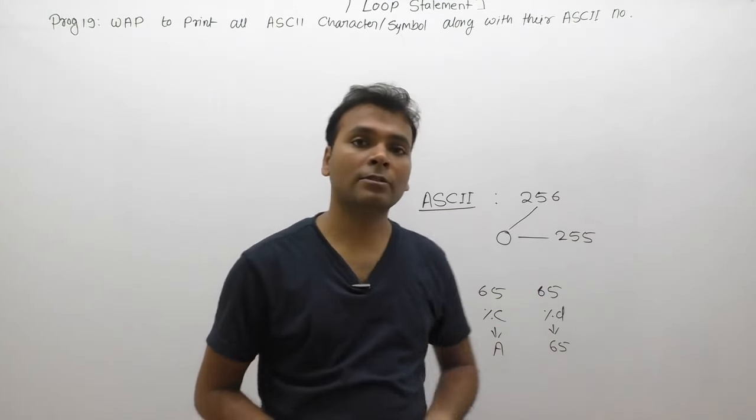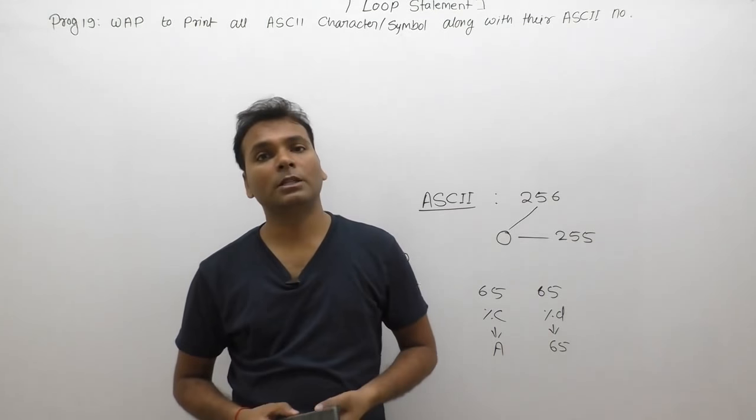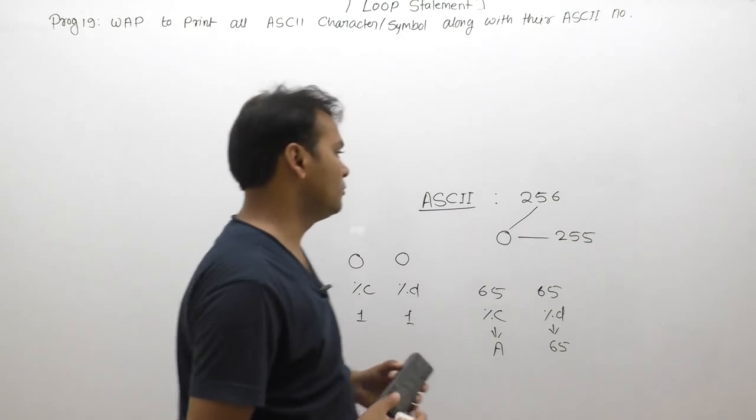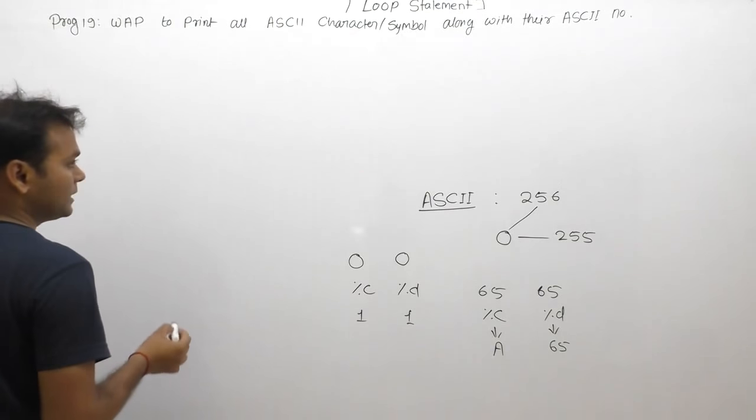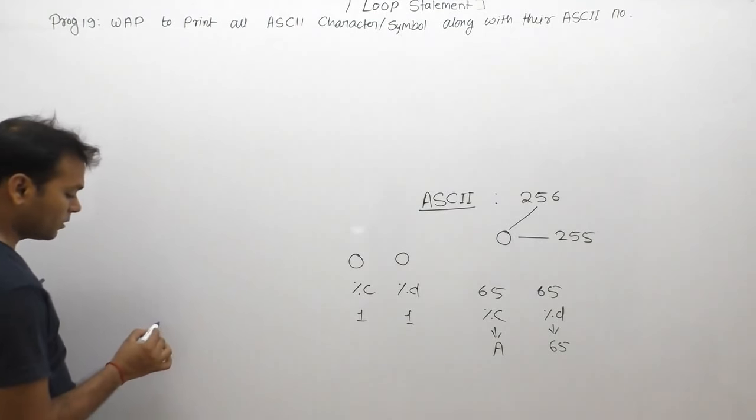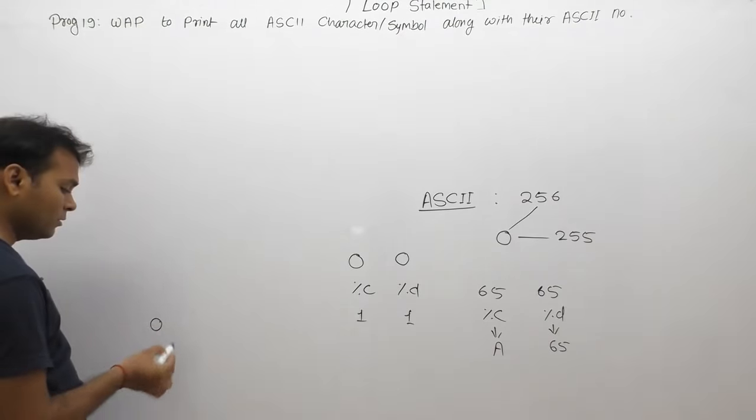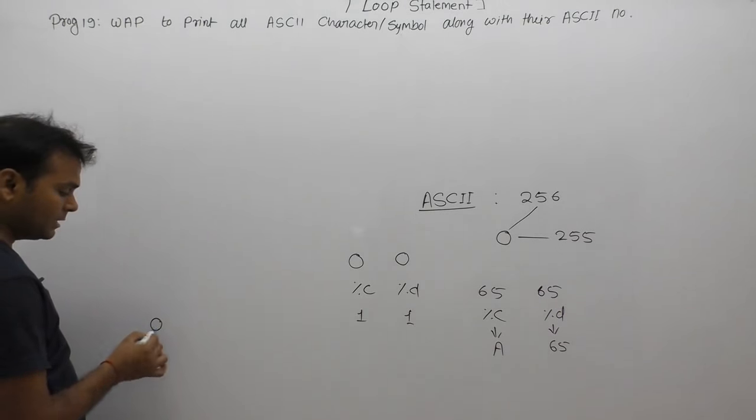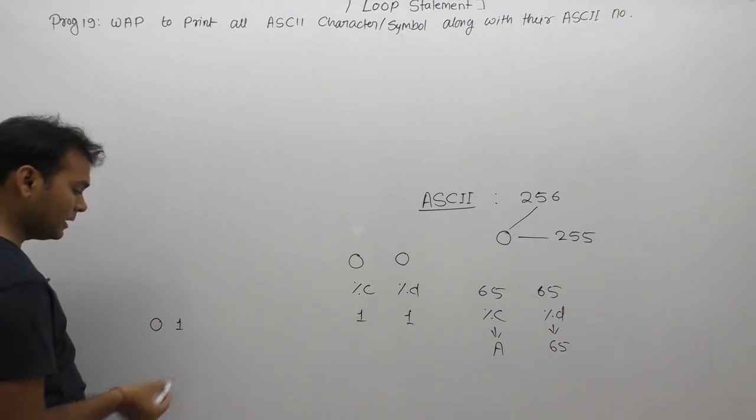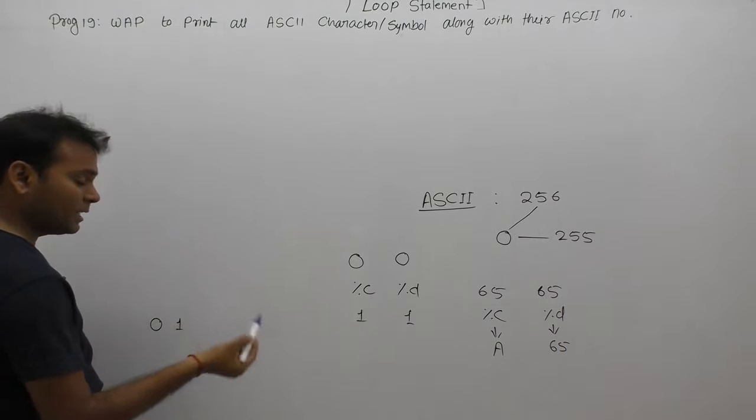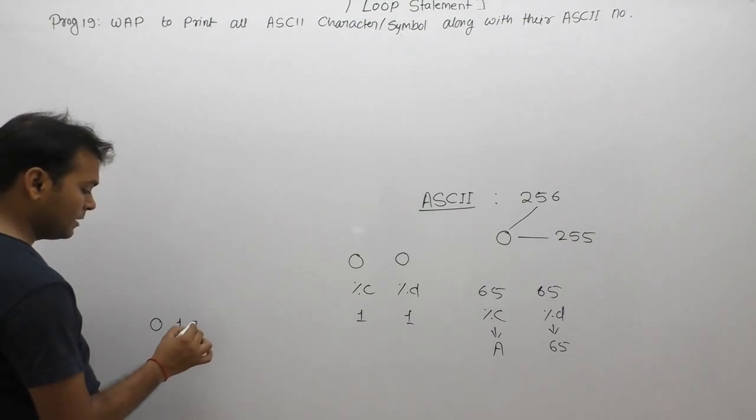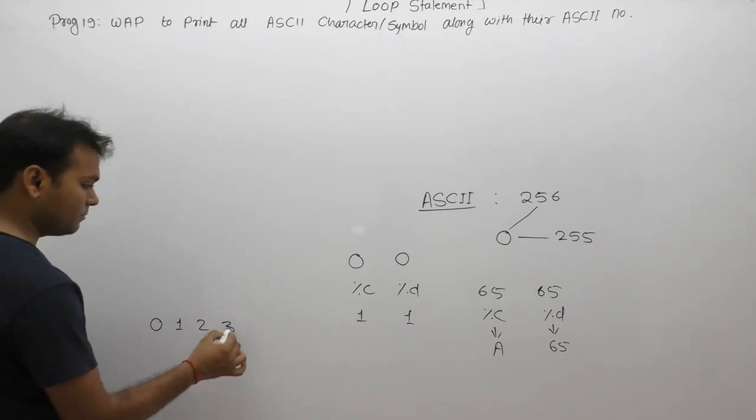I'll ask you: when you start from 0 up to 255, simply in this case use a loop. Loop will start from 0. ASCII value of first character is 0, ASCII value of second character is 1. Character means any symbols, not only alphabets. 1, 2, 3, 4, 5, 6, 7, and so on.